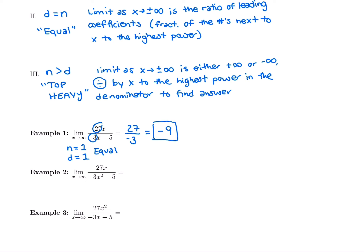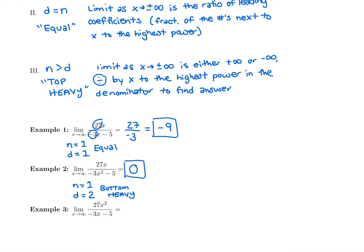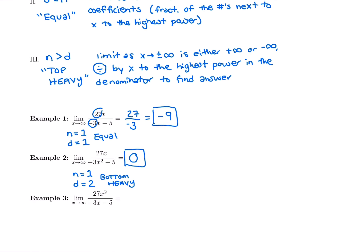The next example has 27x in the numerator, so the degree of the numerator is 1. But the denominator has x squared, so its degree is 2. This is bottom heavy — b goes with b, bottom heavy is the best. The answer is always zero. We're dividing something small by something huge; dividing x by x squared leaves us with nothing.